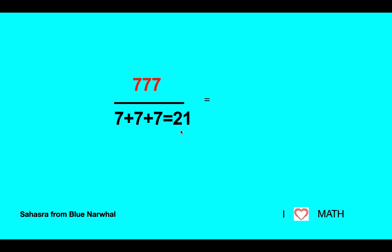Then I have 777. I'm going to add them up and that gives me 21. 777 divided by 21 equals 37. This is another time. Next, 888. I'm going to do the same thing, but now I get 24. 888 divided by 24 equals again 37.